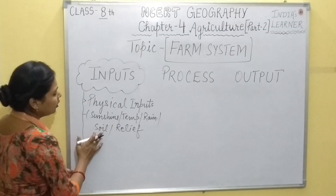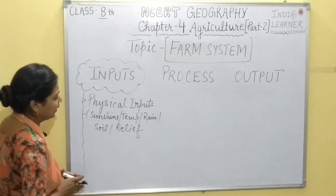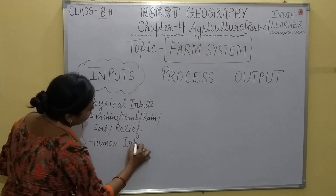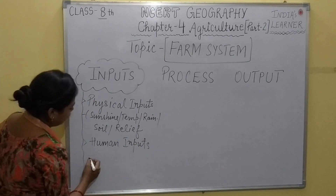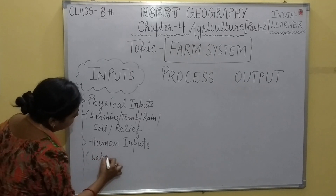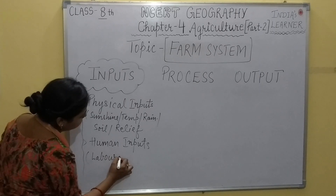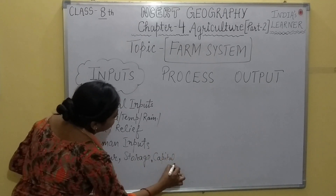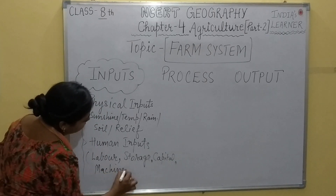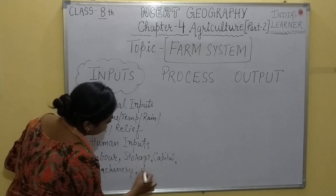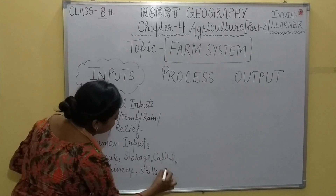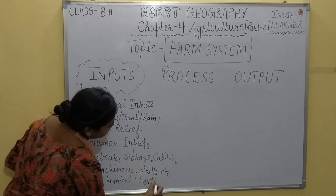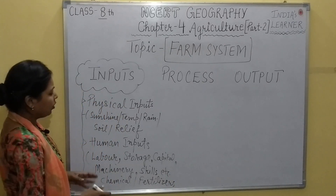Human inputs also play an important role in every form of agriculture. Examples include labor, storage, capital, machinery, and skills. Chemicals and fertilizers are also required in every type of farming. These are all the human inputs that are brought to the farmland to be processed and then to get the required output.